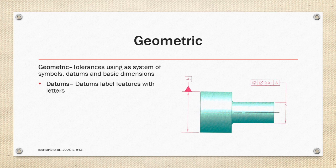Datums label features with letters. Like the example on the right, datum A is defined as the larger diameter of the object.